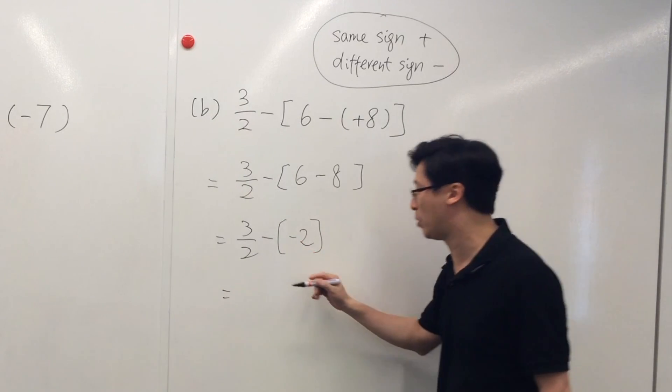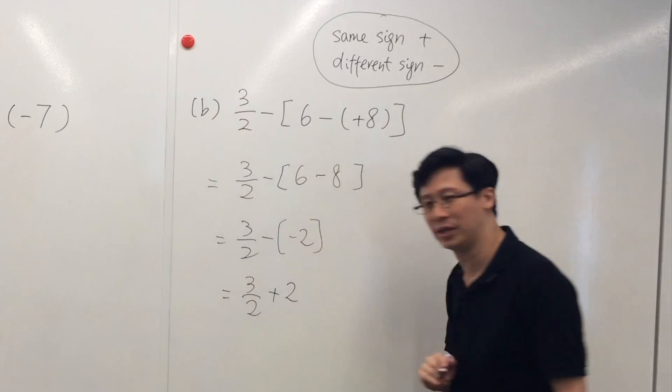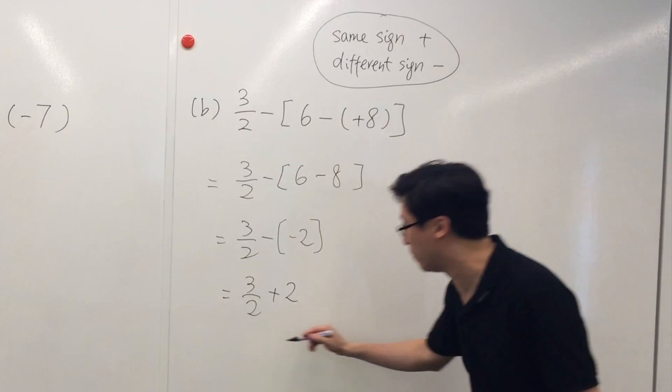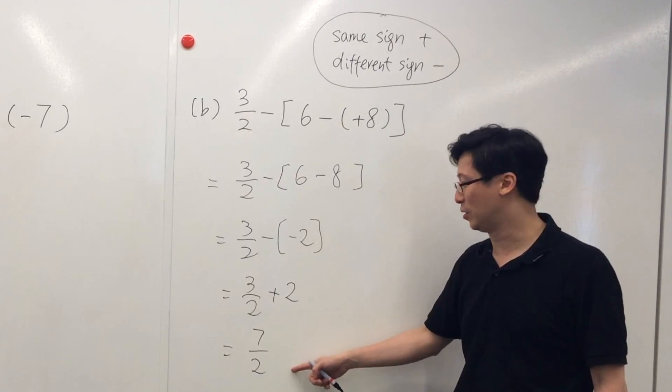3 over 2 plus 2. And then we can add these two numbers, so the final answer will be 7 over 2.